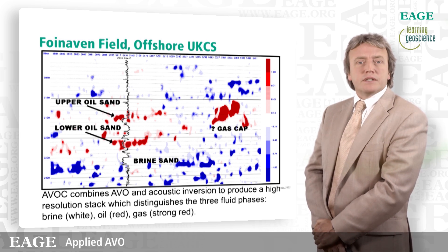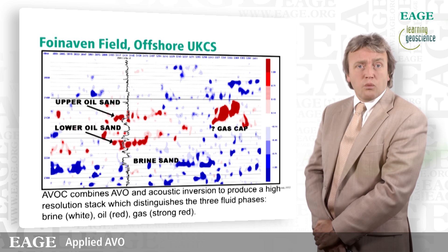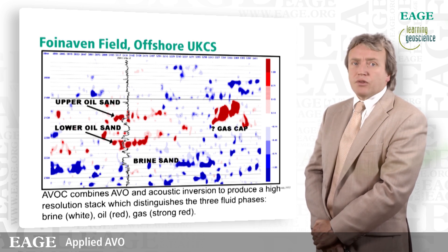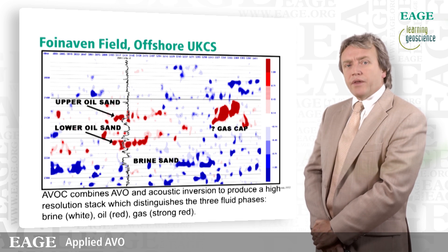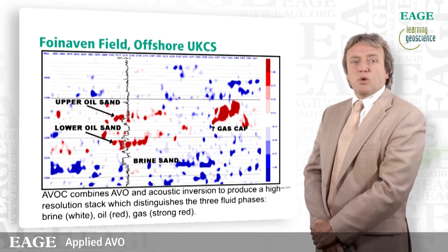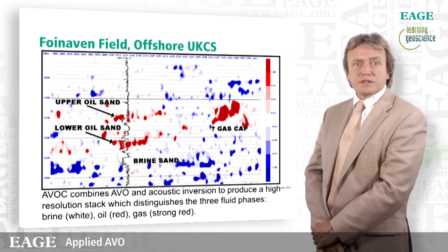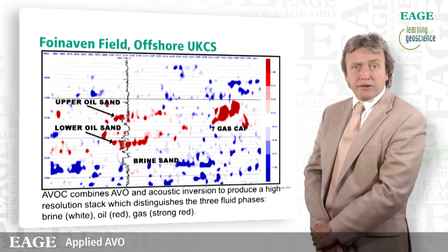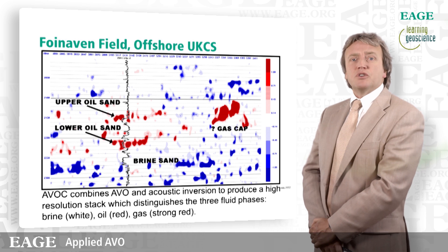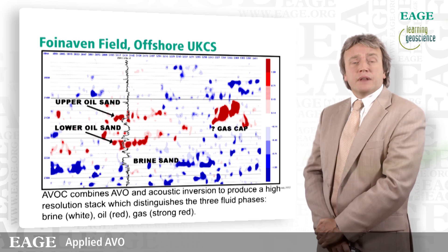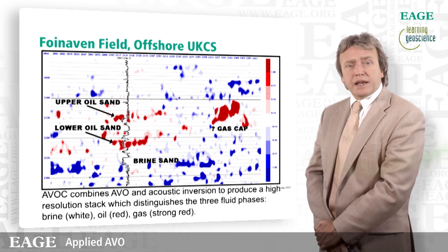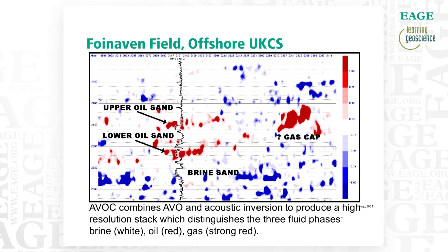Going a bit deeper, we see the brine sand — the water wet sand — which is very clear on the log, but there's nothing coming through on the seismic signal. So we've got a lovely calibrated tool: we can now go and explore for oil elsewhere in this seismic volume. To the right of the image there's a question mark labelled gas cap, which has been confirmed as a gas cap in this field — it's brighter still. So not only can we distinguish brine versus hydrocarbons, qualitatively at least, we can distinguish oil versus gas.